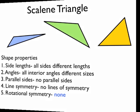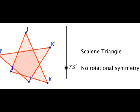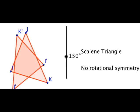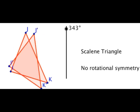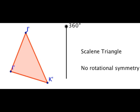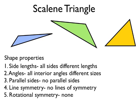A scalene triangle also has no rotational symmetry. As I rotate this scalene triangle through one whole turn, it doesn't look the same as the original shape at any intermediate point — only when I get to one full rotation does the shape look like the original position. So a scalene triangle has all sides of different lengths, all interior angles of different sizes, no parallel sides, no lines of symmetry, and no rotational symmetry.